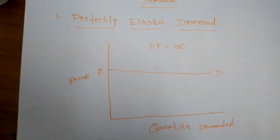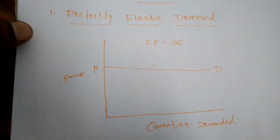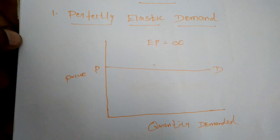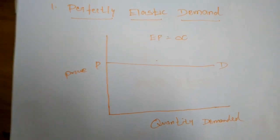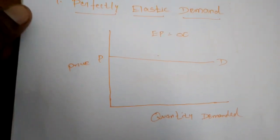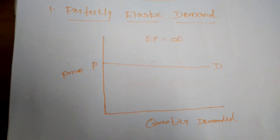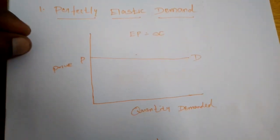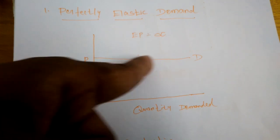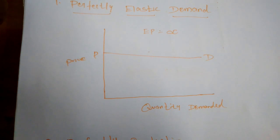Perfectly elastic demand means that even a slight increase or decrease in the price of a commodity causes an infinite change in quantity demanded. The demand is said to be perfectly elastic when a slight change in price causes an infinite change in quantity demanded. For example, if the price of gold decreases slightly, people always want to buy more gold based on the speculative effect.